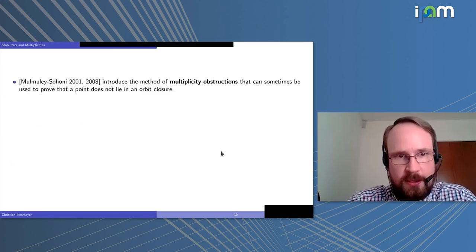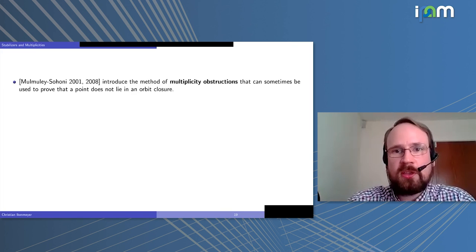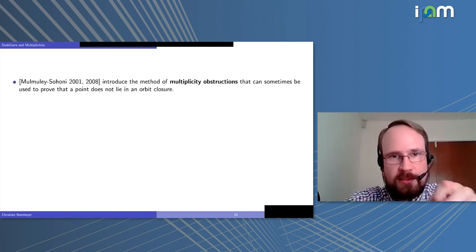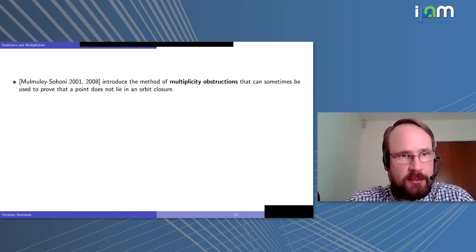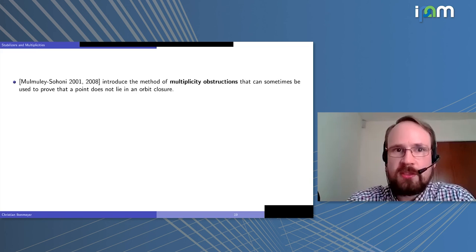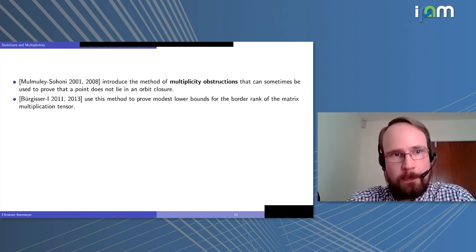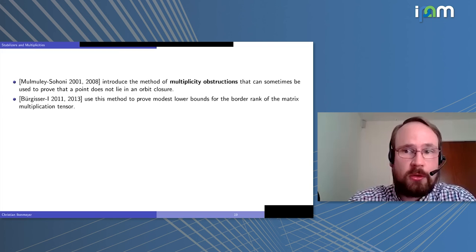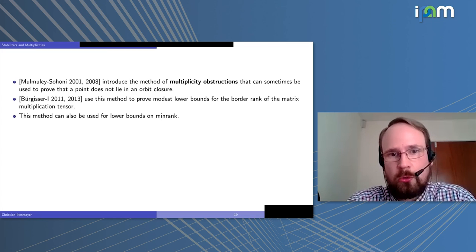I want to use a technique introduced by Mulmuley-Sohoni using multiplicity obstructions, which can sometimes prove that a point does not lie in an orbit closure. It is a fairly general technique and it is currently open in what settings it works well. It works well in the min rank problem, and also in earlier work with Peter Bürgisser to prove moduli lower bounds for the border rank, even for the matrix multiplication tensor. It can be used to show lower bounds on min rank.